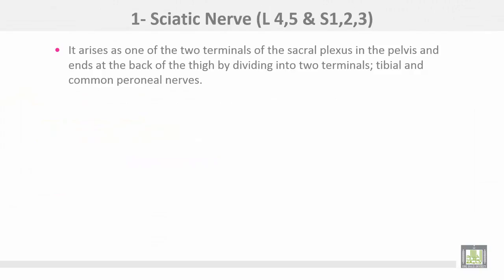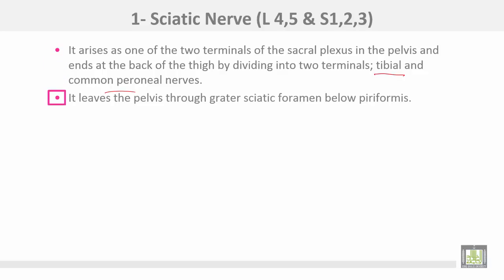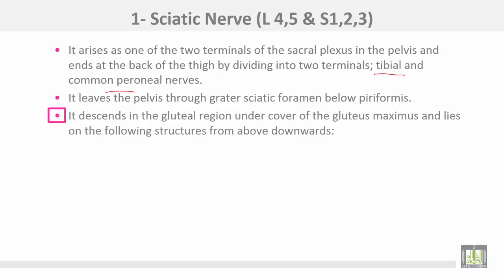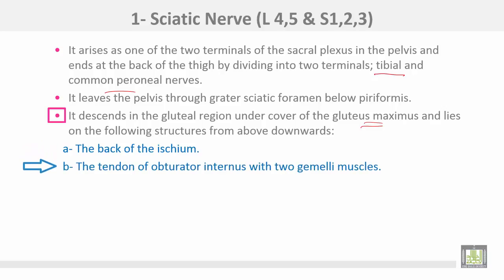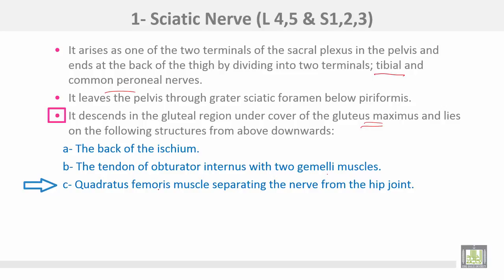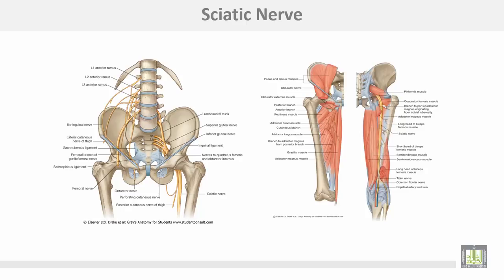The sciatic nerve has root values from L4, L5, S1, S2, and S3. It arises as one of the two terminal branches of the sacral plexus in the pelvis, and ends at the back of the thigh by dividing into the tibial and common peroneal branches. It leaves the pelvis through the greater sciatic foramen below the piriformis muscle, descends in the gluteal region under cover of gluteus maximus, and lies successively on the back of the ischium, on the tendon of obturator internus with the two gemelli muscles, and then on the quadratus femoris, which separates the nerve from the hip joint. This is the sciatic nerve arising from the sacral plexus.